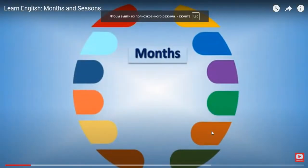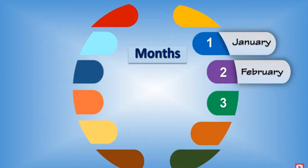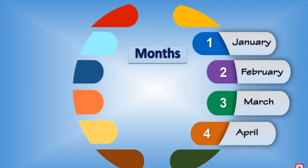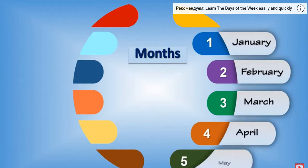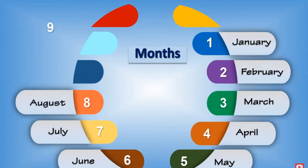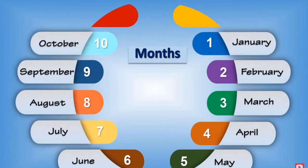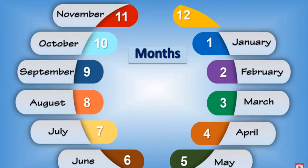Months of the Year: January, February, March, April, May, June, July, August, September, October, November, December.